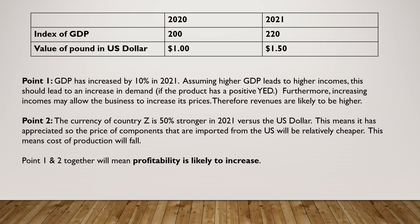Another point you could have made relates to the second column: the currency of country Z is 50% stronger — it has appreciated by 50% in 2021 versus the US dollar. This means the price of components imported from the US will be relatively cheaper, so the cost of production will fall. Point one is about revenues, point two is about costs, and they're both going in the right direction — revenues are increasing and costs are falling — so together they mean profitability is likely to increase.